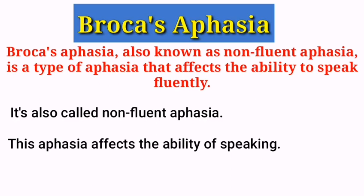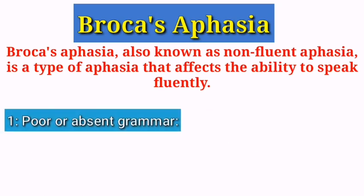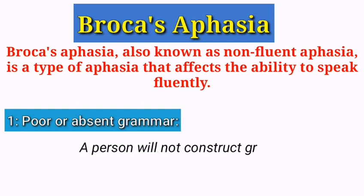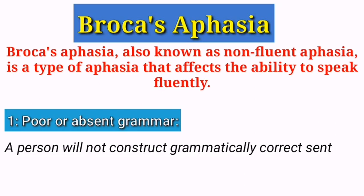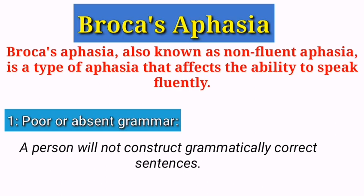The first symptom is poor or absent grammar. A person who has this kind of language disorder will not be able to produce grammatically correct sentences. People with Broca's aphasia may have difficulty putting words in the correct order in a sentence — they will not be able to place proper words in their proper order.